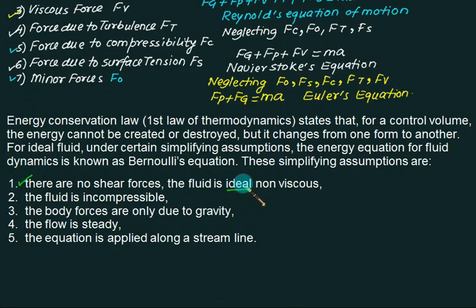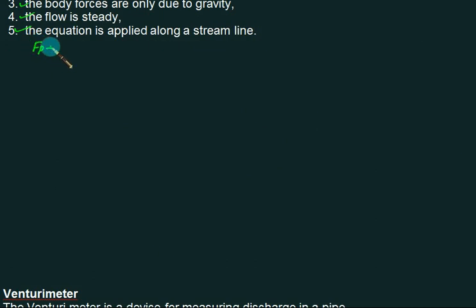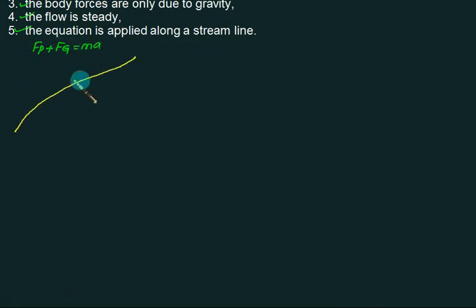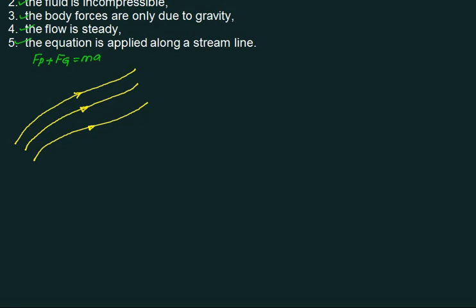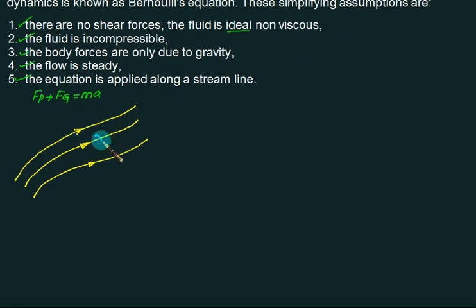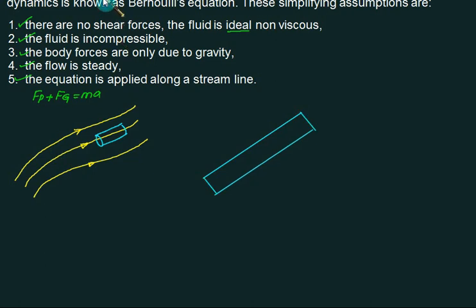In Euler's equation, the shear forces are neglected so the fluid is ideal (non-viscous), the fluid is incompressible, body forces are due to gravity only, and flow is steady. The equation is applied along a streamline. To derive it, we take a small cylindrical element of constant diameter along the streamline and enlarge it.